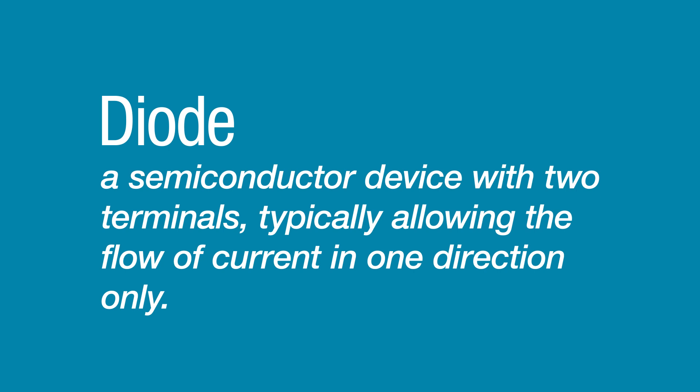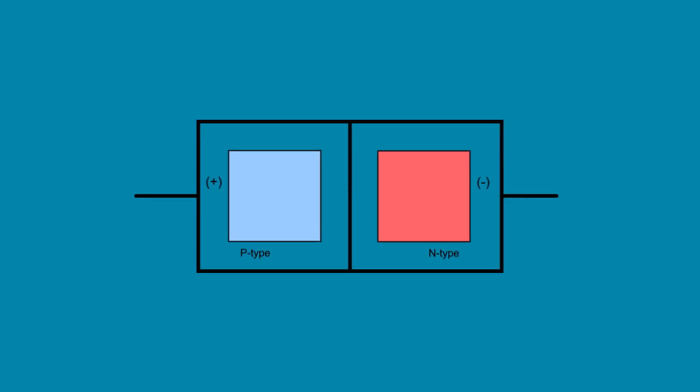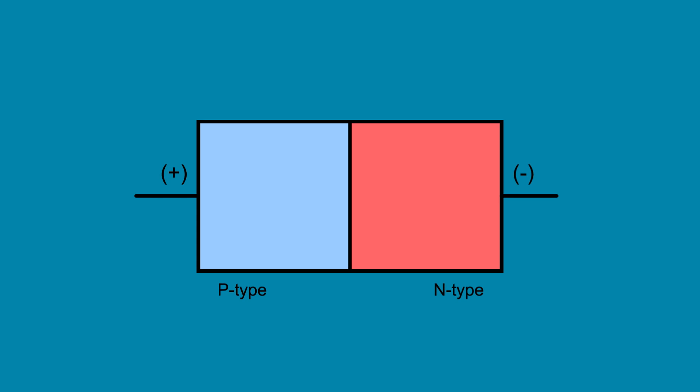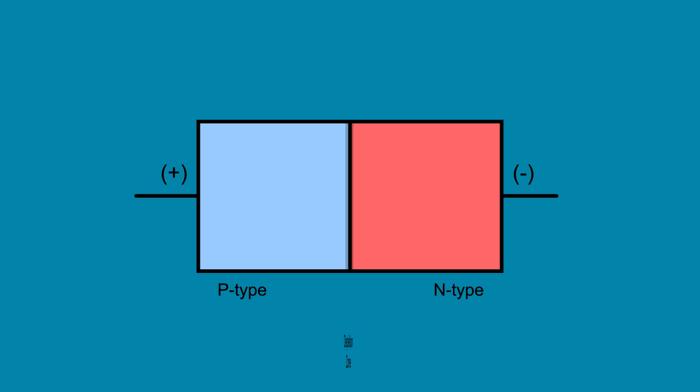Let's start with what a diode is and how it works. A diode is a two-terminal component that allows current to flow in one direction but not the other. This one-way only flow is a result of the interaction between the two regions within the diode. While both regions are made of a semiconductor material, they are each doped with an extra, different material causing it to be charged, the p-type region being positively charged, while the n-type region is negatively charged. Where the two regions meet is called the depletion zone.